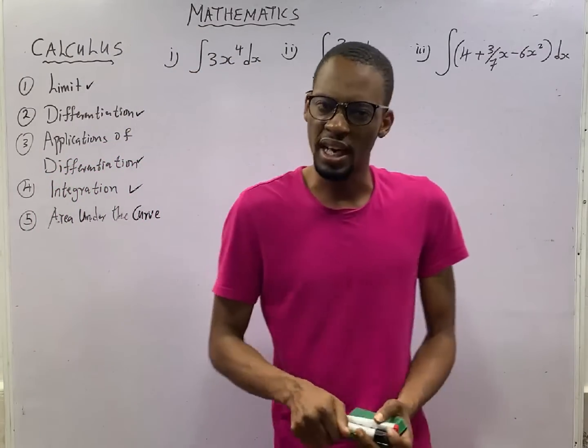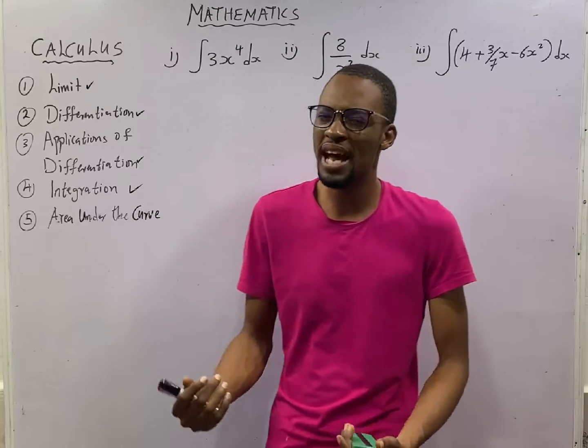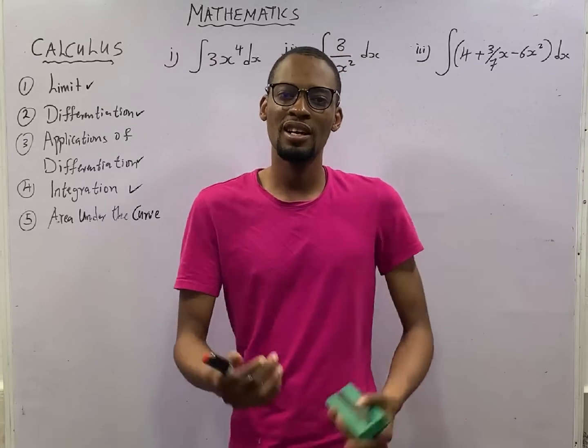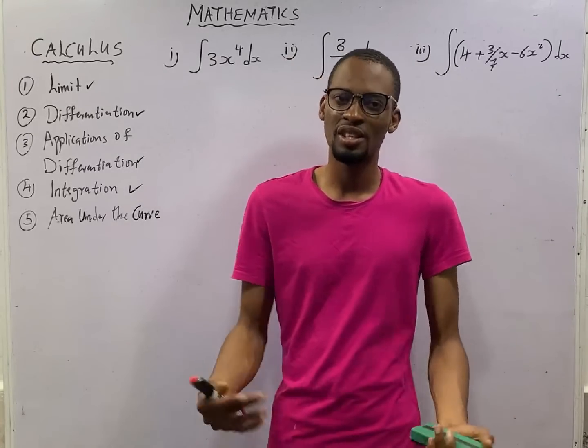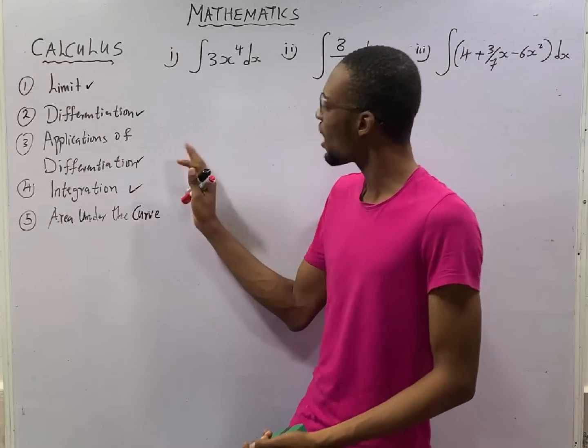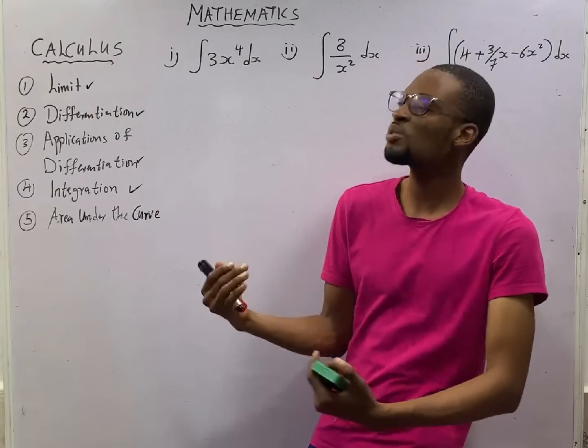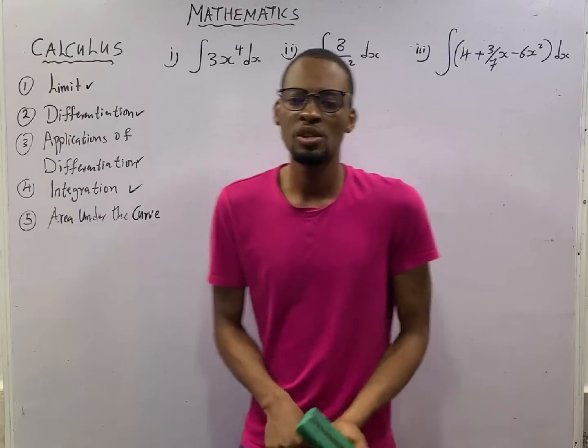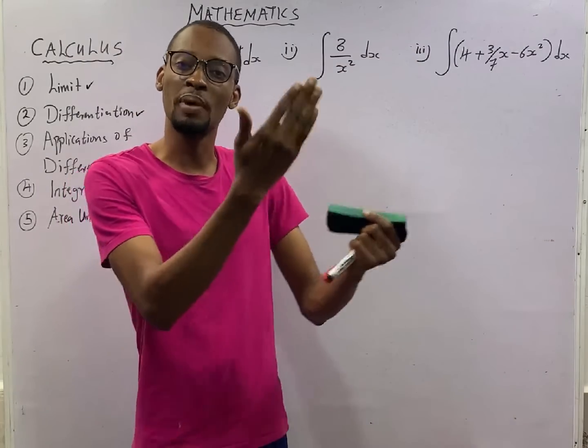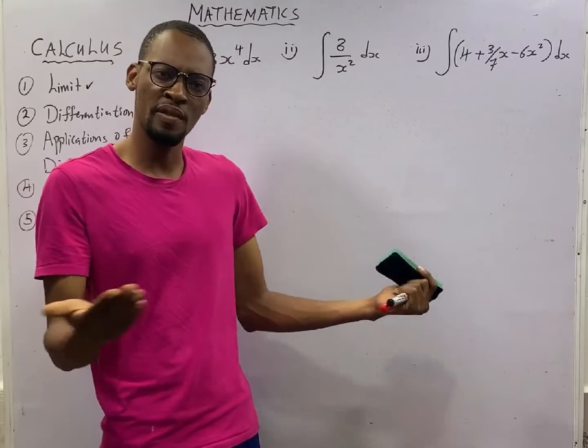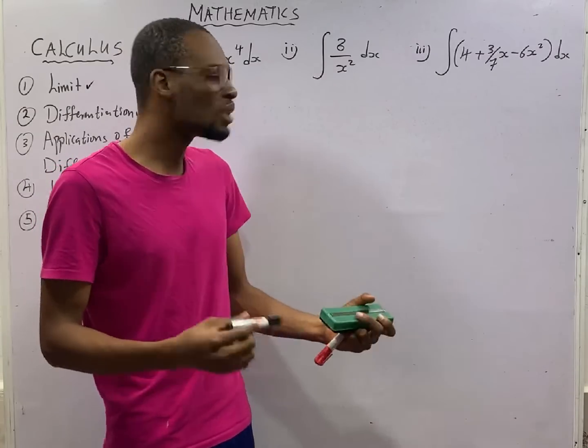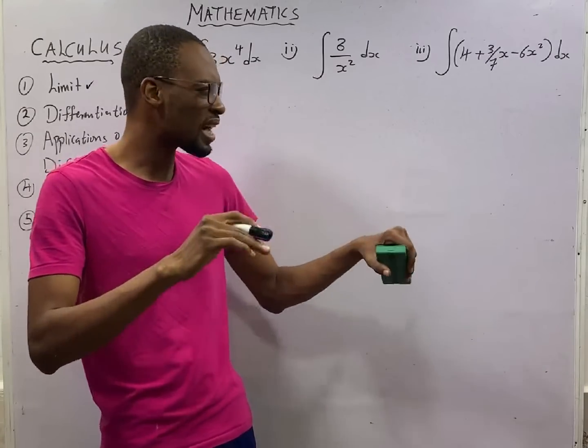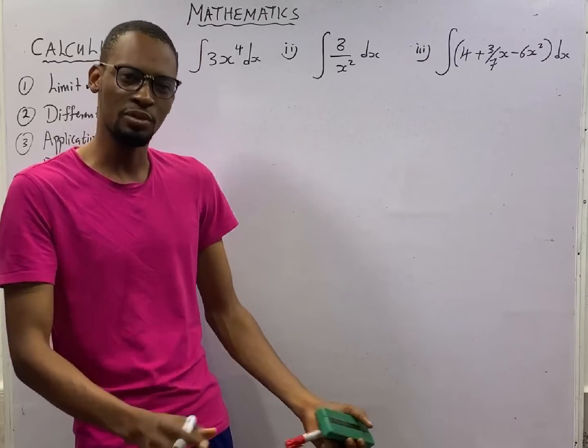And I also told you that if you are given an algebraic expression and told to differentiate, you will say the power times the function, then you subtract one from the power. But for integration, you don't subtract. You add one to the power and you divide by the power. Then you add plus c to show that a constant has been accounted for.